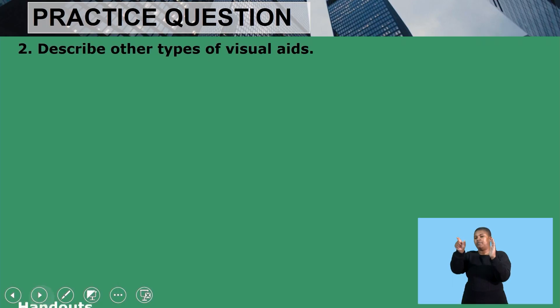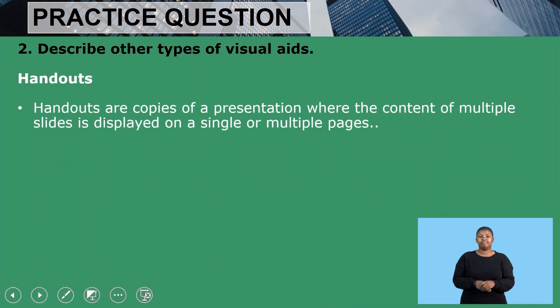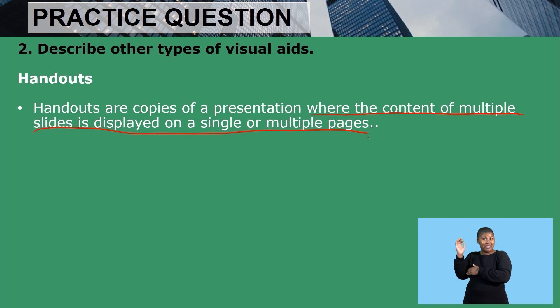Still on describing other types of visual aids, we have handouts. Handouts are copies of a presentation where the content of multiple slides is displayed on a single or multiple pages, summarizing the information presented. Handouts can be given before the presentation — to make the audience interested in what you are going to present — or after the presentation, to remind the audience at home what the presentation was about.